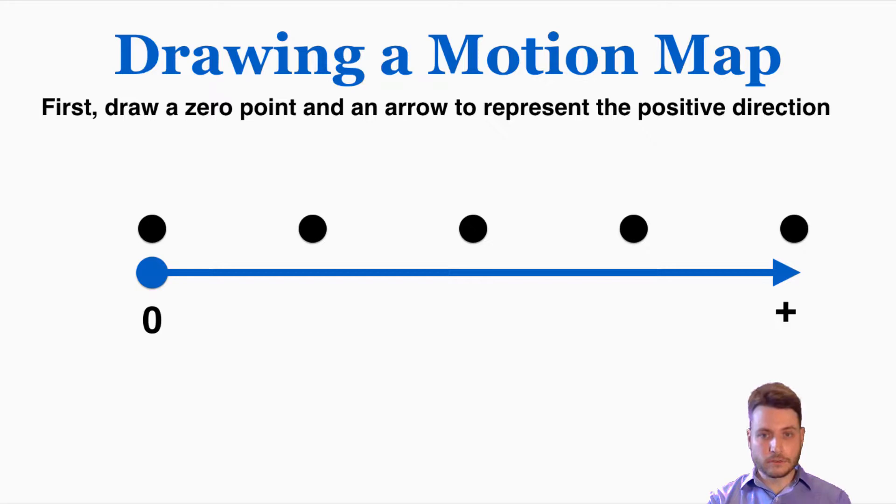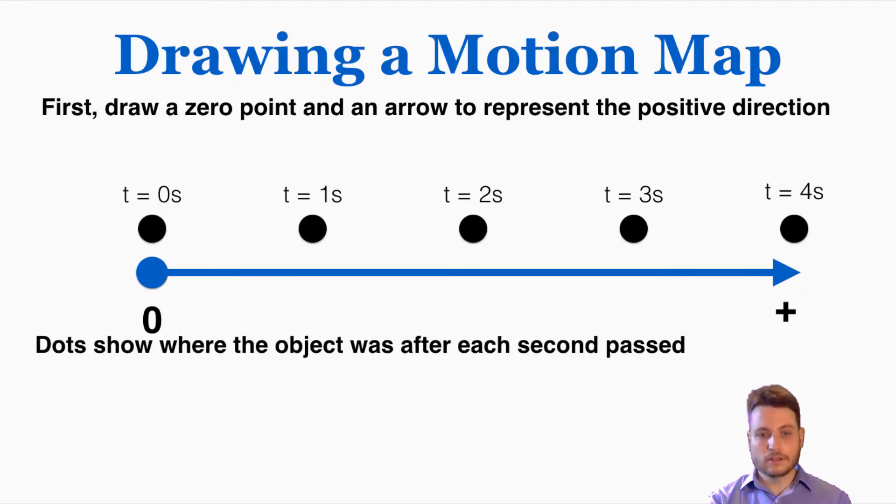The next thing to do is to label these points with the time that it was when we drew them. So this is what that would look like. Before time had started, that was the first point. And then time is equal to one second, two seconds, three seconds, and four seconds. So the dots show where the object was after each second passed.